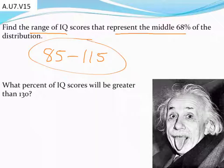And so that range of values then must be IQ scores between 85 and 115. Alright, so that's kind of how we're going to be using that empirical scale, that graph with the different percentages on it to answer some questions. Next up they say, what percent of IQ scores will be greater than 130?